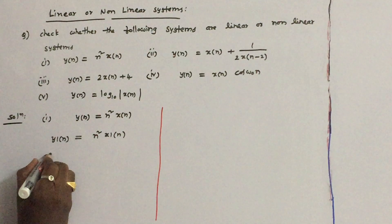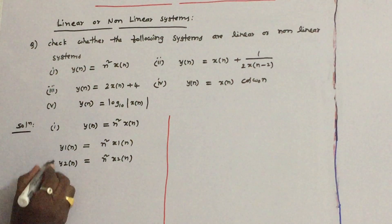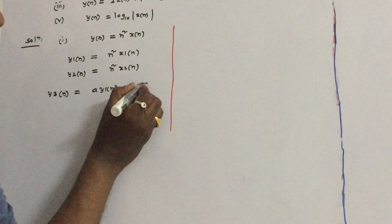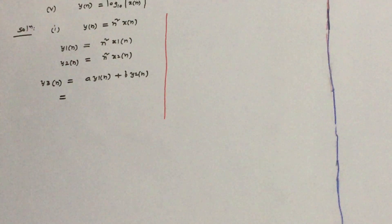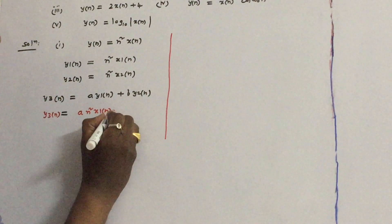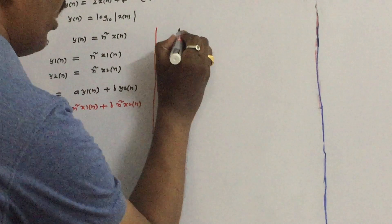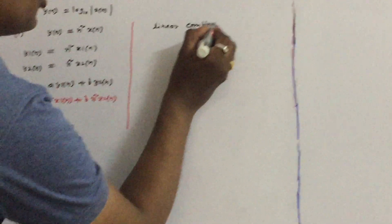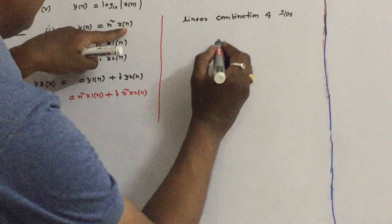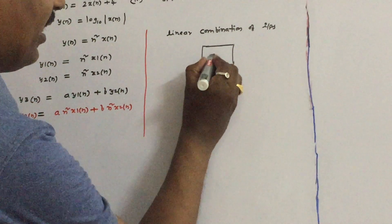Now let us apply x2(n) to the system. The response y2(n) is equal to n² into x2(n). First let us add the individual responses. Let us call this y3(n), equal to a·y1(n) plus b·y2(n). Therefore y3(n) is equal to a·n²·x1(n) plus b·n²·x2(n). So let us see what the next step is — we have to apply the linear combination of inputs to the system.